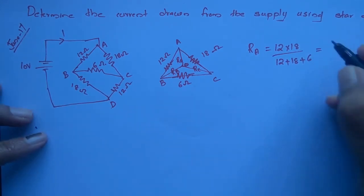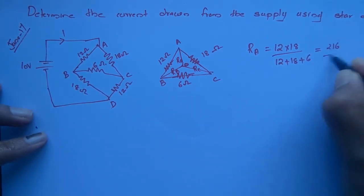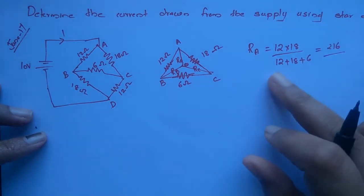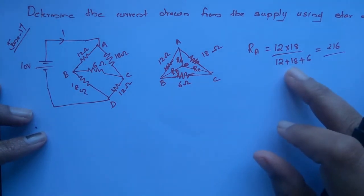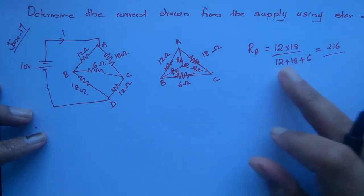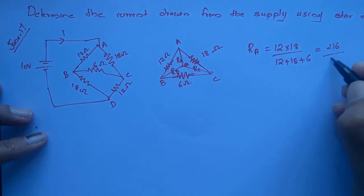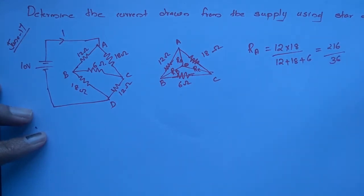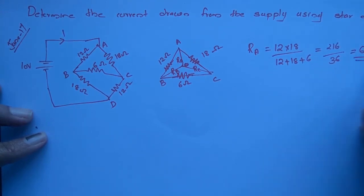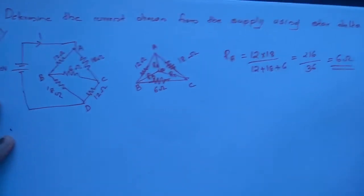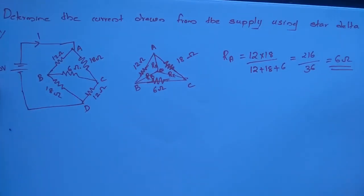So Ra: 12 into 18 is 216, divided by 12 plus 18 plus 6, which is 36. So 216 divided by 36 equals 6. Ra is equal to 6 ohm.